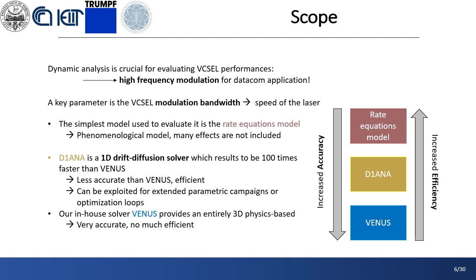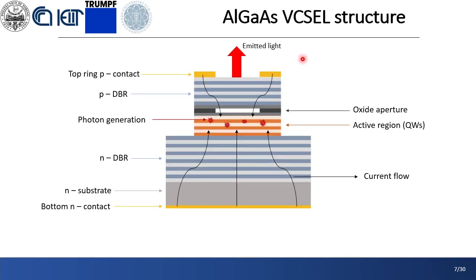However, the high degree of accuracy is achieved at the cost of heavy computational burden that entails substantial time-consuming simulations. What we want to present here is the possibility of grasping the details of the dynamic behavior of a VCSEL, avoiding the use of the computationally intensive Venus by means of a simplified version of it, DNA. This is simply based on a 1D diffusion solver that results to be 100 times faster than Venus, yet returning reliable results, such that it can be used for extended parametric campaigns or, as done in this work, a significantly faster dynamic analysis. Before going on, I want to give a brief introduction about the structure of an oxide-confined aluminum gallium arsenide VCSEL.